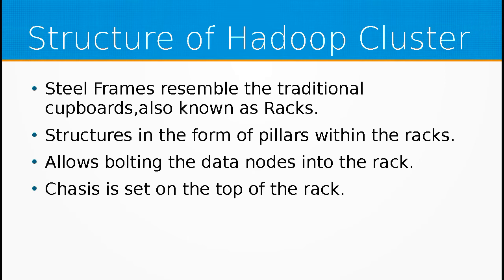A rack would consist of anywhere between 25 to 50 nodes, and these racks don't just accommodate the data node. They can also accommodate the name node, the secondary name node, and the job tracker.